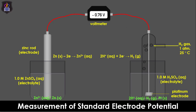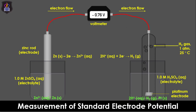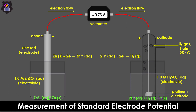In other words, zinc has the ability to reduce hydrogen ions. The negative sign confirms that electrons flow from the zinc electrode to the hydrogen electrode, thereby making the zinc half cell the anode and the negatively charged electrode.